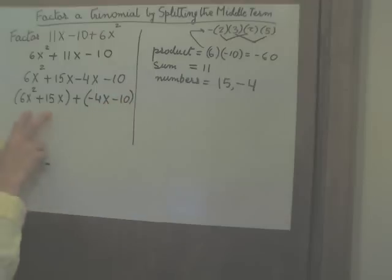Next step, you factor each group. In this group, 3x is the common factor, common to both terms. Let's factor that out. 3x times the quantity 2x plus 5.